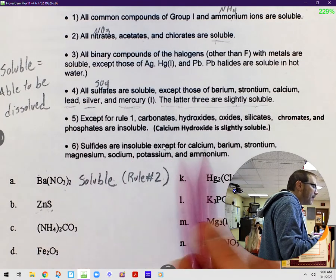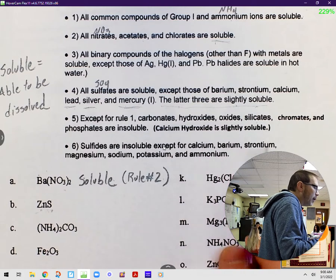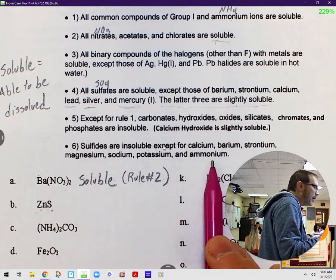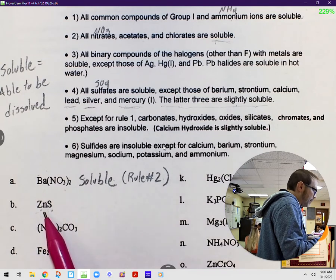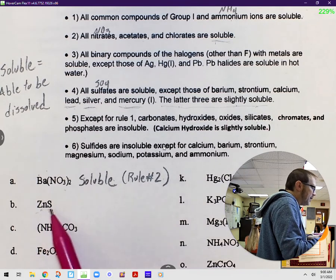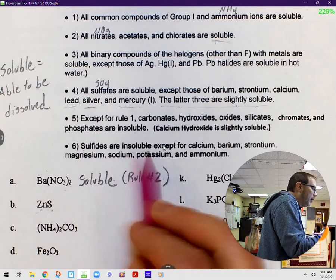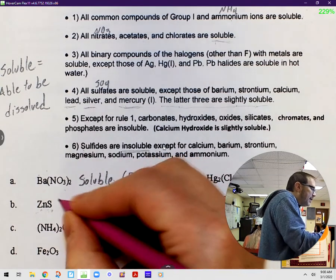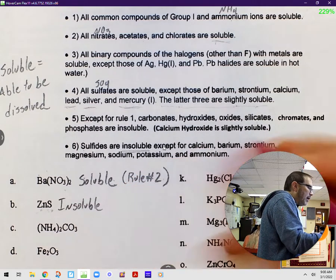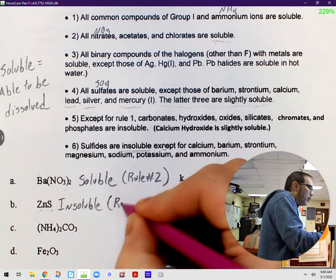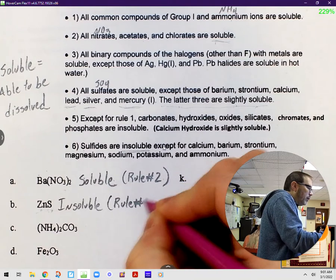Wait, there's exceptions except for calcium, barium, strontium, magnesium, sodium, potassium, and ammonium. Is that any of those? It is not. So it's a sulfide, and it says here sulfides are insoluble. So I'm going to write out beside this, insoluble. And for my justification, I'm going to put rule number 6.